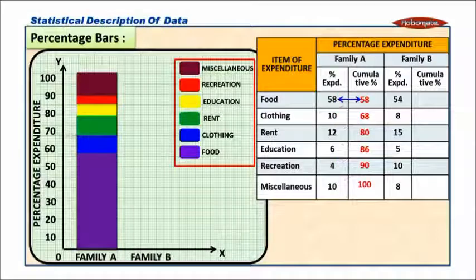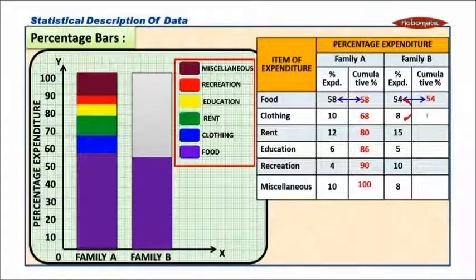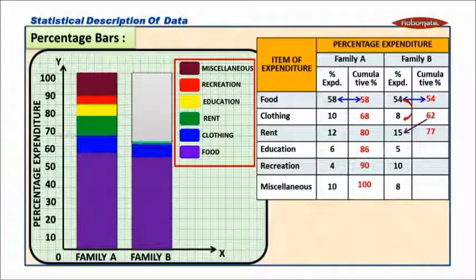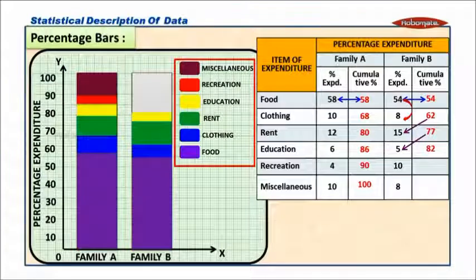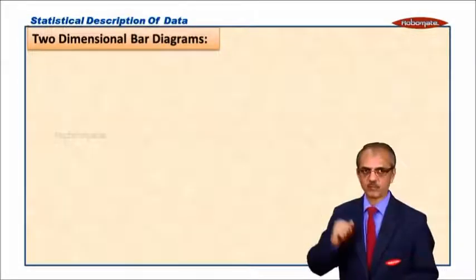For Family B also we consider the same way. Raise to 100, then for food 54 percent, 54 plus 8 equals 62, then 77, plus 5 equals 82, 82 plus 10 equals 92, and 92 plus 8 equals 100. So percentage bar diagram. Now we have two-dimensional bar diagram.